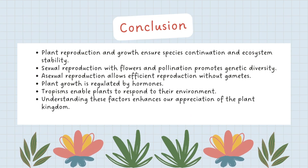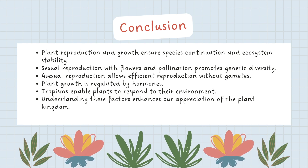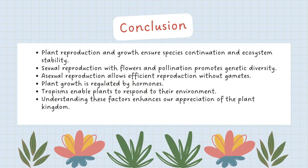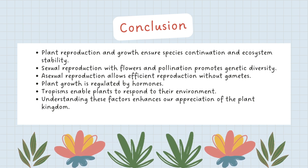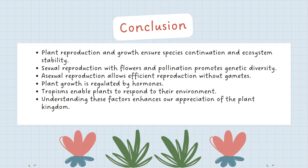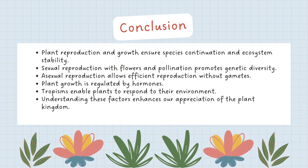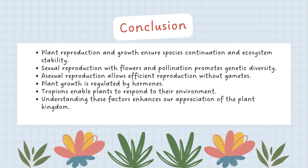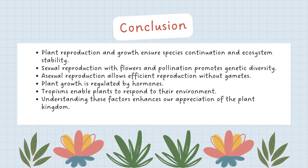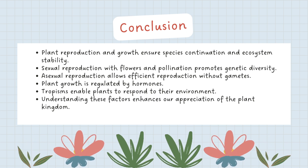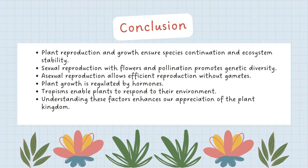In conclusion, plant reproduction and growth are intricate processes that ensure the continuation of plant species and contribute to the stability of ecosystems. Sexual reproduction, with its complex flower structures and pollination mechanisms, plays a vital role in genetic diversity. Additionally, asexual reproduction enables plants to reproduce efficiently. Plant growth is regulated by hormones, and tropisms allow plants to respond to their environment. By appreciating the factors that influence plant reproduction and growth, we can better understand and appreciate the beauty and resilience of the plant kingdom.